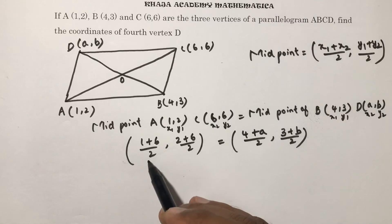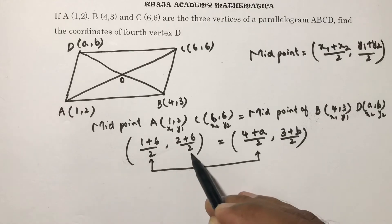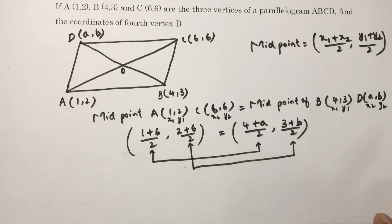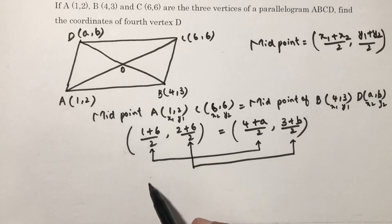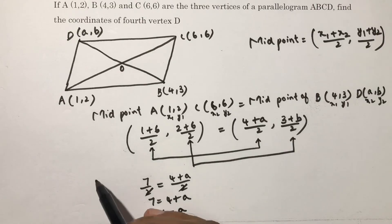So now here, if I'll equate abscissa with abscissa and ordinate with ordinate. Now here we'll get 1 plus 6, 7 by 2, equals 4 plus A by 2. 2 and 2 cancel, 7 equals 4 plus A, so 7 minus 4 equals A. Therefore the value of A is 3.